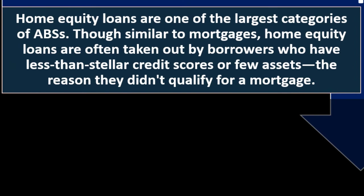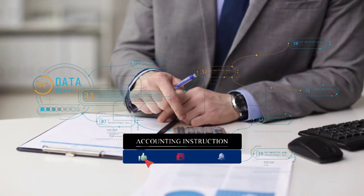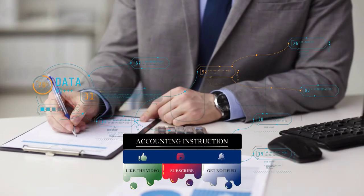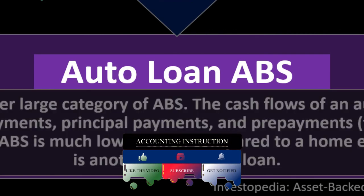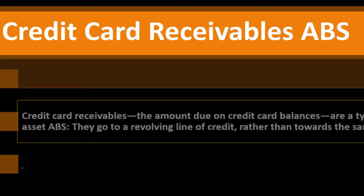Home equity loans are one of the largest categories of ABS. Though similar to mortgages, home equity loans are often taken out by borrowers with less-than-stellar credit scores or few assets — the reason they don't qualify for a mortgage. These are amortizing loans: payment goes toward satisfying a specific sum, consisting of three categories — interest, principal, and prepayment. Auto loan ABS is another large category; its cash flows include monthly interest payments, principal payments, and prepayments, though prepayments are rarer and lower compared to home equity loan ABS.